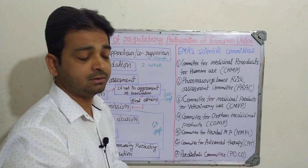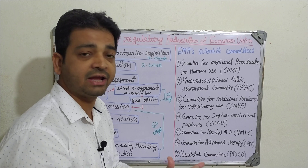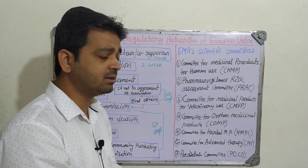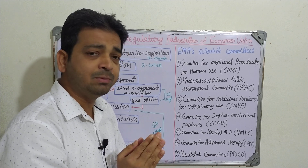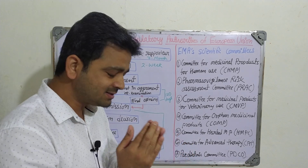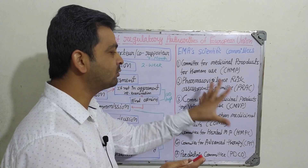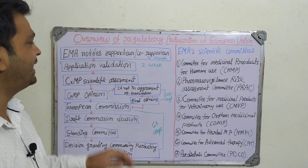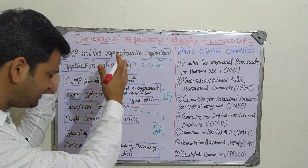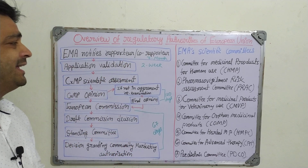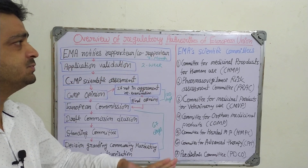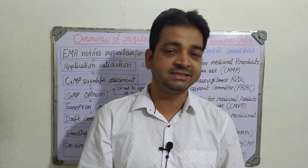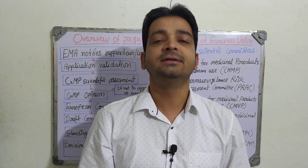The seventh committee is the Pediatric Committee (PDCO), which handles medications for children, kids, and infants. These require deep and serious scientific review. These are the seven committees of the European Medical Agency. The schematic diagram showing the approval process with timelines is very important. These are the regulatory authorities that exist in European countries.